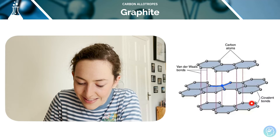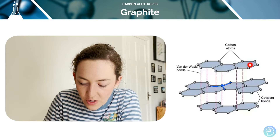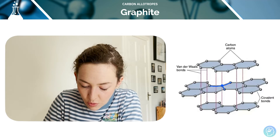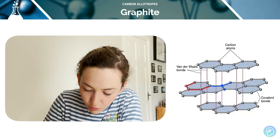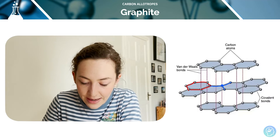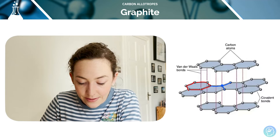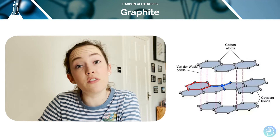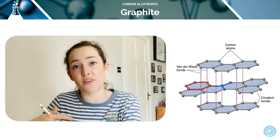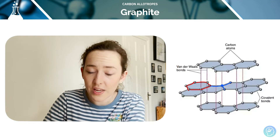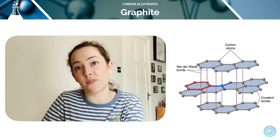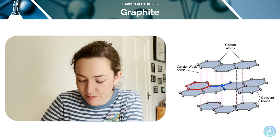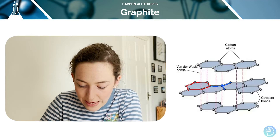What we end up with is this layer structure — carbon atoms are arranged in hexagonal sheets, meaning hexagons: one, two, three, four, five, six — hexagonal sheets in layers. The layers are joined by weak intermolecular forces called London forces. On the old specification we used to call them van der Waals — check your specification. On OCR we now call them London, but they are weak intermolecular forces.